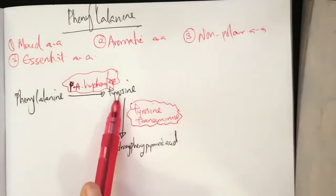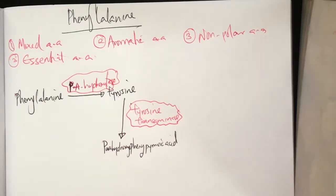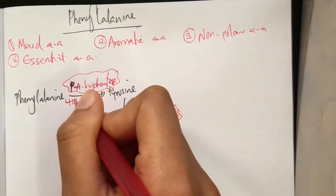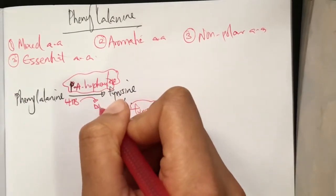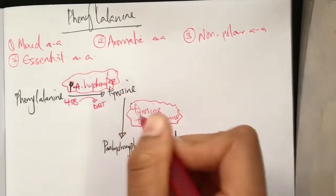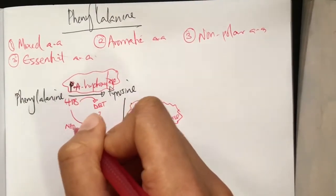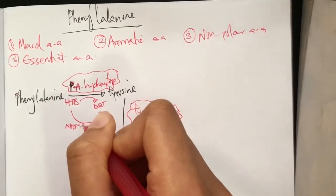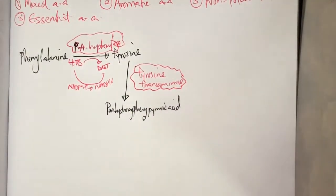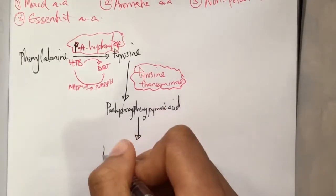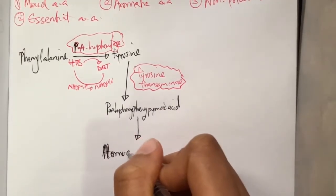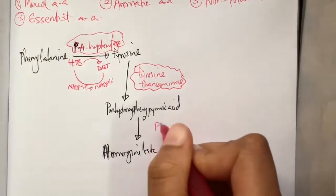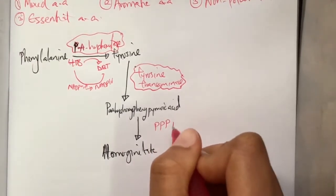Note that during the conversion of phenylalanine to tyrosine we need a cofactor known as tetrabiopterin, which is converted into dihydrobiopterin with the help of NADP+ to NADPH. Parahydroxyphenylpyruvic acid is then converted into homogentisate with the help of an enzyme known as parahydroxyphenylpyruvic hydroxylase.